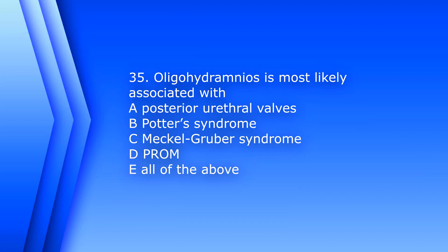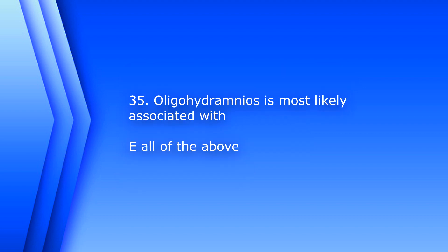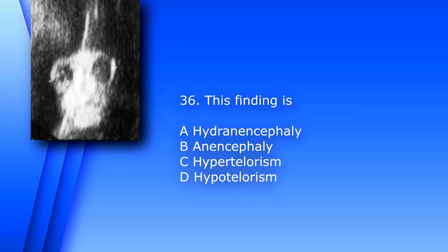Question 35: Oligohydramnios is most likely associated with A) posterior urethral valves, B) Potter's syndrome, C) Meckel-Gruber syndrome, D) premature rupture of membranes, or E) all of the above. The answer is E, all of the above.